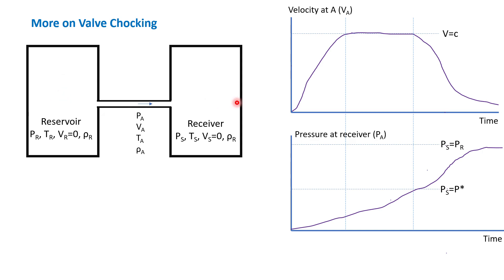The first condition so that the gas can flow is that the receiver pressure PS must be lower than PR. For the sake of example, let's assume that in the beginning, PS — which is the receiver pressure — is equal to zero, and PR is way higher.